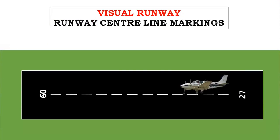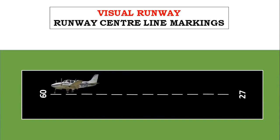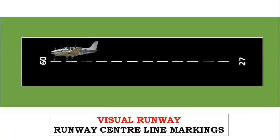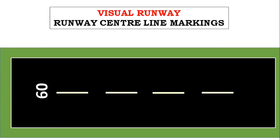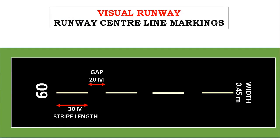Runway centerline markings identify the center of the runway and provide alignment guidance to aircraft during takeoff and landing. The stripes are 30 meters long with a gap of 20 meters. The width of a visual runway centerline stripe is 0.45 meters.